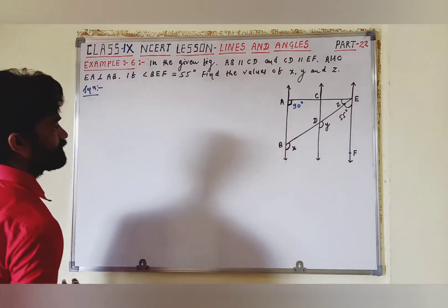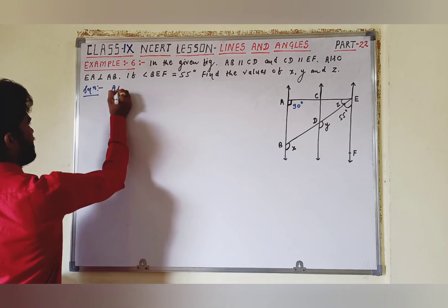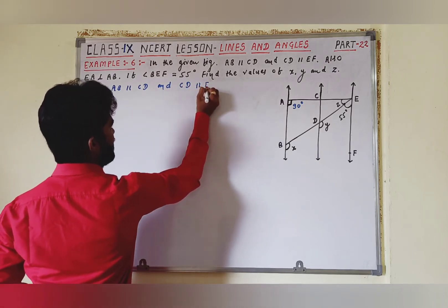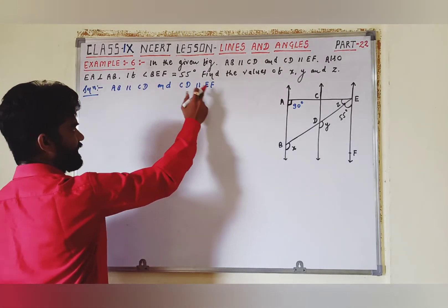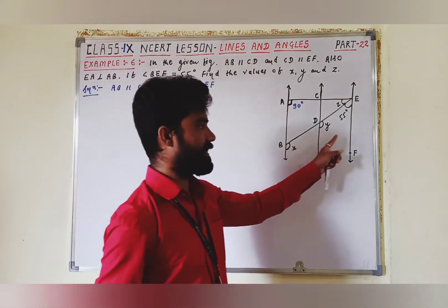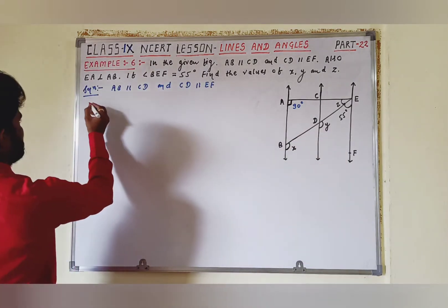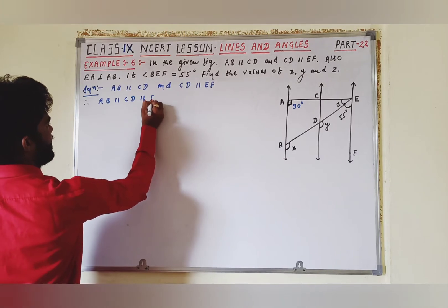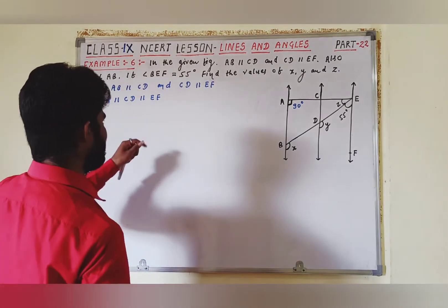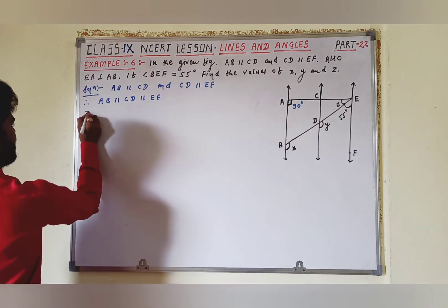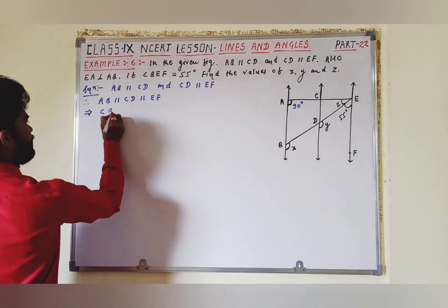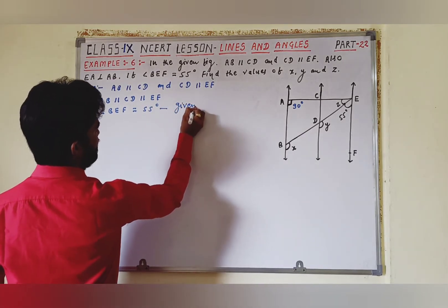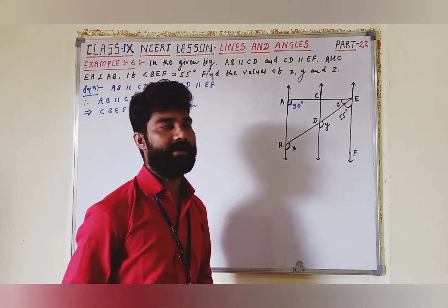So देखो, इस तरह से solve करना है यह question. यहाँपर given में देखते हैं कि AB parallel to CD है, और CD parallel to EF है। जब AB, CD को parallel है और CD, EF को — so also AB, EF को — मतलब यह तीनों lines एक दूसरी को parallel हो जाएंगे। Therefore, AB parallel to CD parallel to EF. Again, given में angle BEF = 55 degree है।